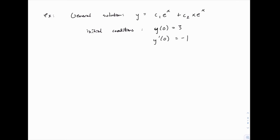So let's find that derivative first. If the general solution is c1 e to the x plus c2 x e to the x, the derivative of that, the first term will just be c1 e to the x again.